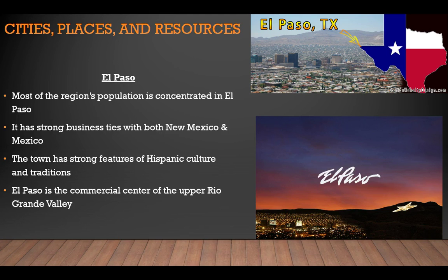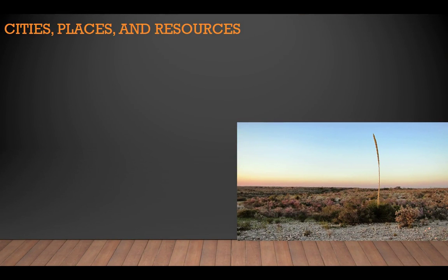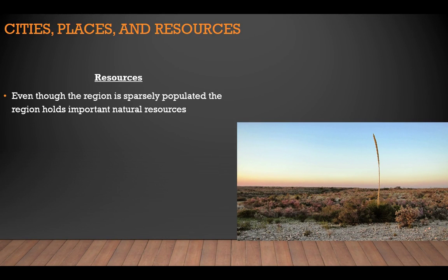However, there are those who say that NAFTA has caused problems in the United States. For example, many factories moved businesses closer to the Mexican border because of low-cost labor, resulting in many Americans losing their jobs. Some economists believe NAFTA contributed to economic troubles in the late 20th and early 21st century. Even though the Mountain Basins region is sparsely populated, it holds significant natural resources, including petroleum and natural gas.